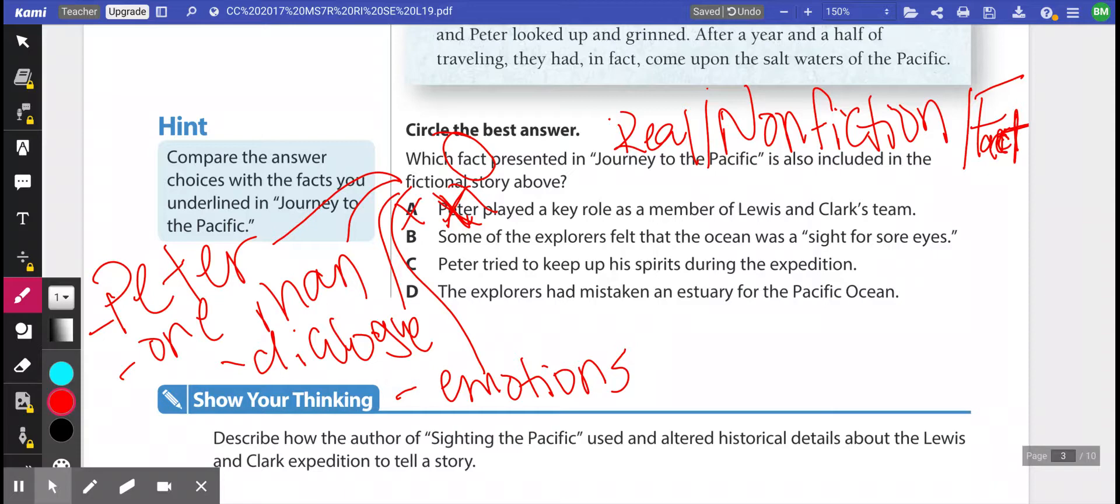B says some of the explorers felt that the ocean was a sight for sore eyes. As much as I love this idiom, which goes back to what we talked about earlier, this figure of speech that it doesn't actually mean their eyes hurt, sight for sore eyes just means that it was something that they wanted to see really badly and it's something that they were looking forward to seeing or something they're happy about seeing. But it's an idiom. And I'm not really sure that this particular piece of dialogue would have been said or not. And because it's dialogue, it's not going to be part of the original account. When I go back and look at the account, I'm not seeing a whole lot of emotional things that are put in from the explorers of the core of destiny and the core of discoveries.